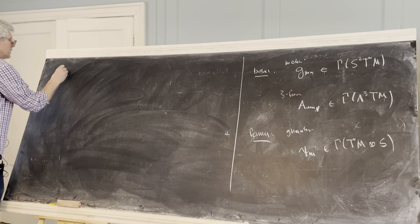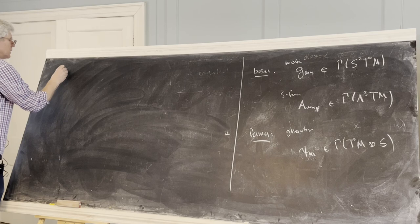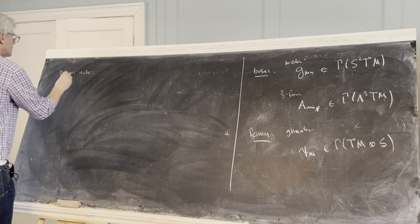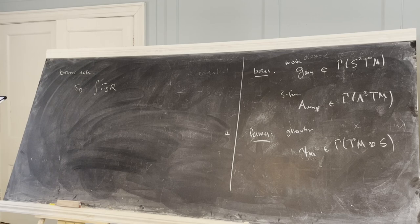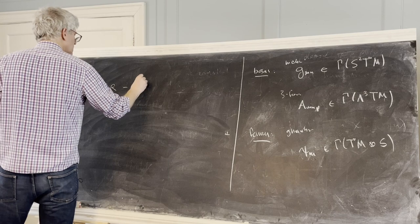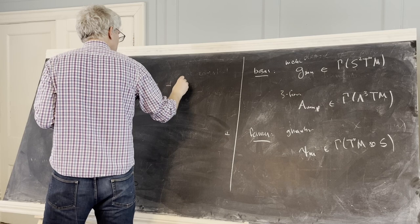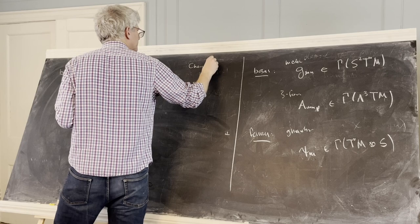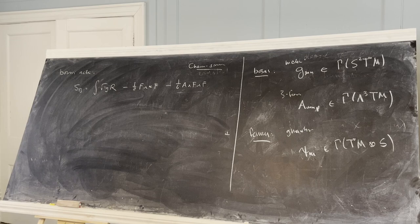Let me just say a couple of other things. We have the bosonic action, which looks like ordinary gravity, and then you get a kinetic term for this gauge field, and then there's a (1/6) A ∧ F ∧ F term, which looks like a Chern-Simons term. When we get to the generalized geometry, we'll see how this term is encoded.